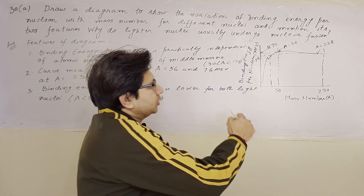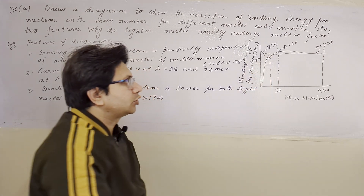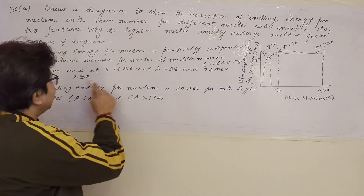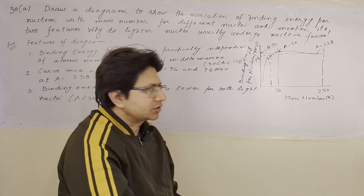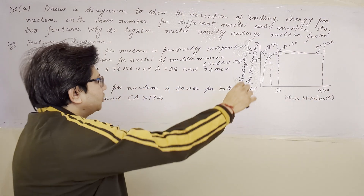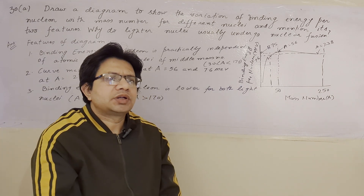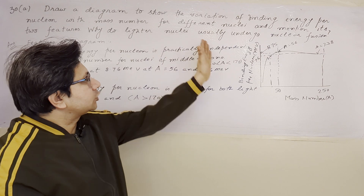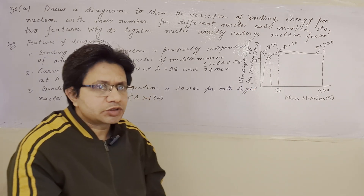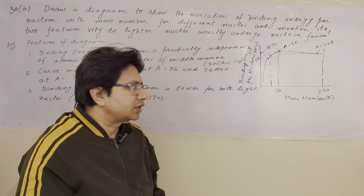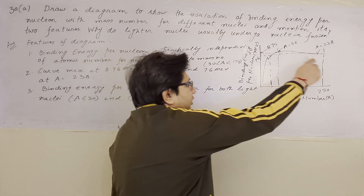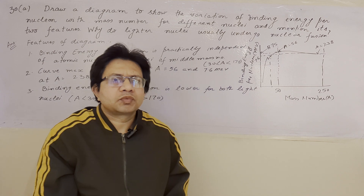The next point gives specific values: at mass number 56, the maximum value is about 8.75 or 8.76 MeV, and at A equals 238 the corresponding value is 7.6 MeV. For A less than 30 and A greater than 170, the nuclei are unstable. This is why lighter nuclei undergo fusion — they fuse to increase their mass number into the stability range, gaining higher binding energy per nucleon and becoming stable.